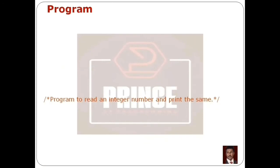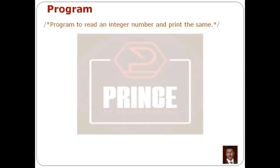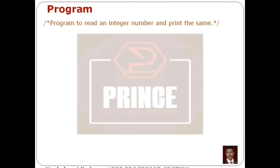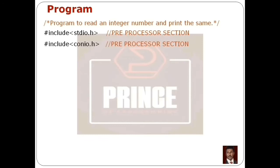Let's review what is in this program. First is the Documentation section, where we use a multiline comment describing the program: to read an integer number and print the same. Next is the Preprocessor Section, which includes stdio.h and conio.h header files. Then the Global Declaration Section.